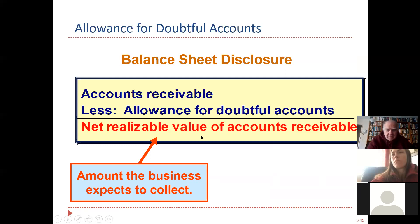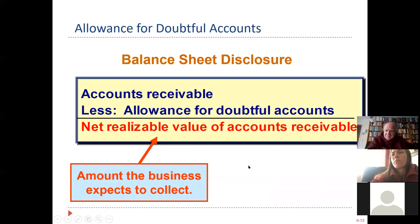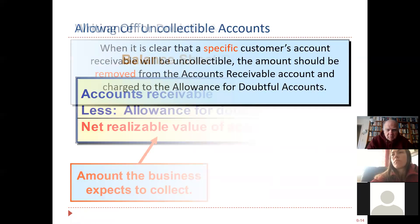So we have accounts receivable of, say, $100 million, less the balance in the allowance account — maybe $10 million. The difference is called net receivables, or net realizable value. This is the amount of your aging that you realistically think you're going to collect. Accounts receivable less the allowance for doubtful accounts equals net receivables.